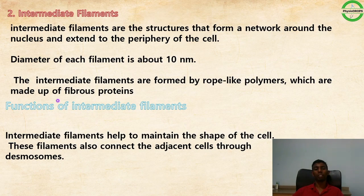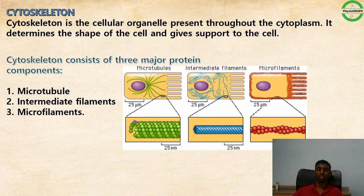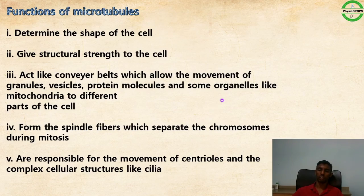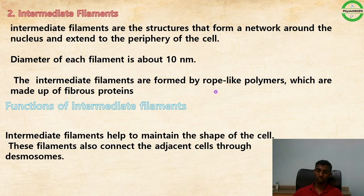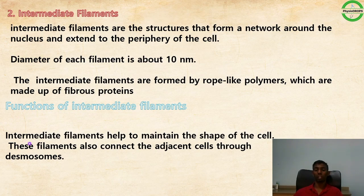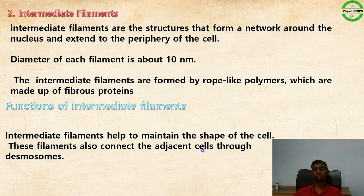Intermediate filaments are between microtubules and microfilaments in size, with a diameter of about 10 nm. They form a network around the nucleus and at the periphery of cells. They are formed by rope-like polymers made of fibrous proteins. Their functions include maintaining the shape of the cell and connecting adjacent cells through desmosomes.